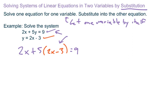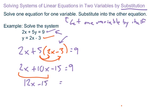So we would, for example, distribute the 5 over the parentheses and get 2x plus 10x minus 15 equals 9.